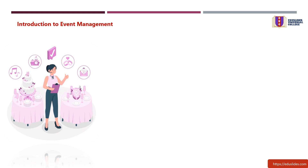Key Components of Event Management. 1. Planning: The first step in event management involves detailed planning. This includes defining the event's purpose, setting goals and objectives.